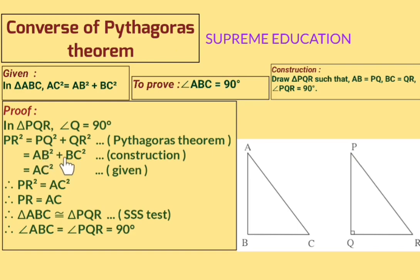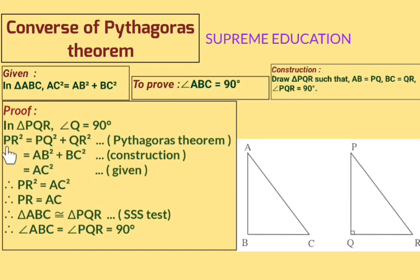Since AB² + BC² = AC² (that is our given), we replace AB² + BC² with AC², giving PR² = AC². Taking square roots on both sides, we get PR = AC.